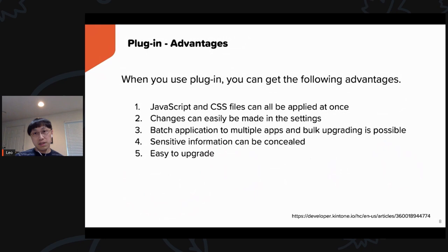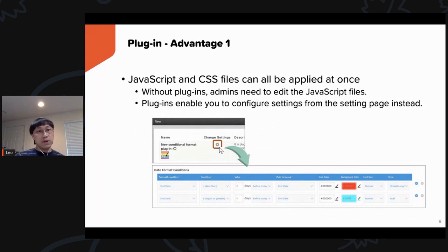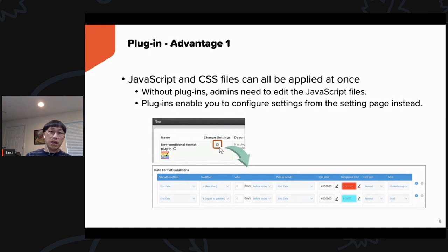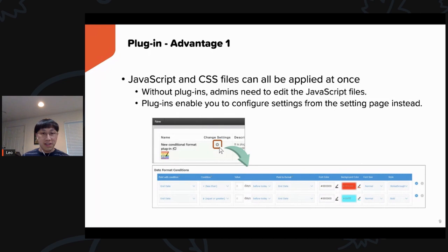Let's talk about some advantages of using a plugin compared to a customization. First, JavaScript and CSS files can all be applied at once. Without plugins, you would have to configure all settings in JavaScript and CSS files separately. But a plugin provides a plugin setting page where you just make simple selections. In the example shown, we change the color of certain field text based on the value of a different field — the user just uses their mouse, clicks around, selects the right field, selects the color, and that's it.